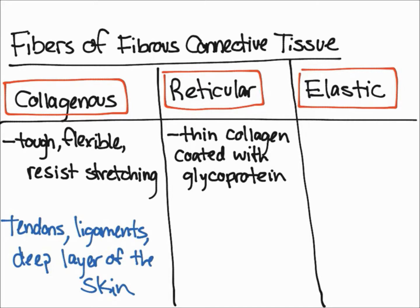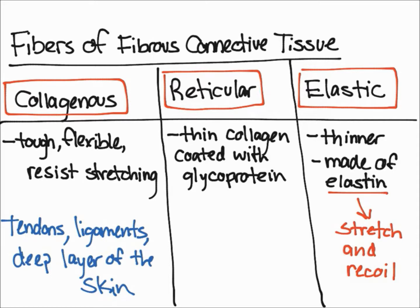The next fiber we're going to talk about is elastic fibers. Elastic fibers are also thinner than collagenous fibers, and they are made up of a protein called elastin. Elastin gives elastic fibers their name and allows the fibers to stretch as well as recoil, kind of like a rubber band consistency.